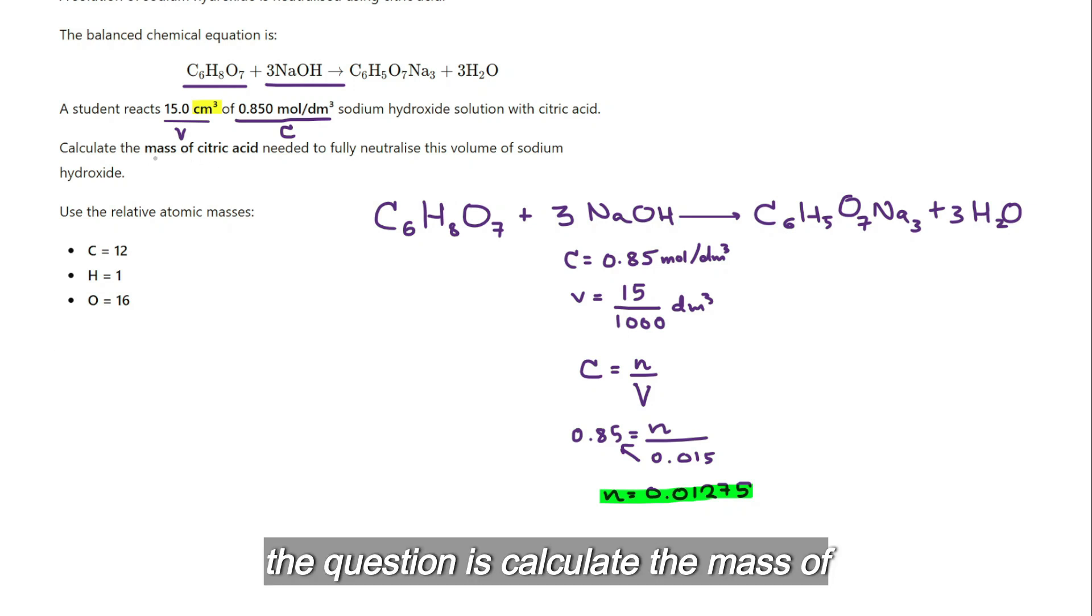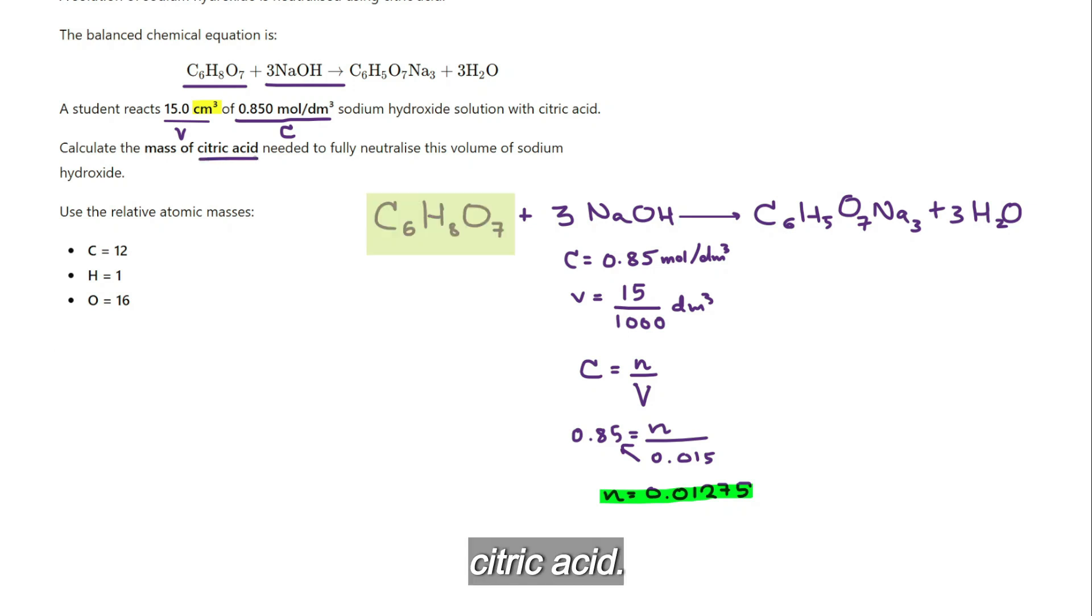Now the question is calculate the mass of citric acid. So we know this number here is 1, and let's look at the ratio. We can clearly see the ratio is 3 is to 1.